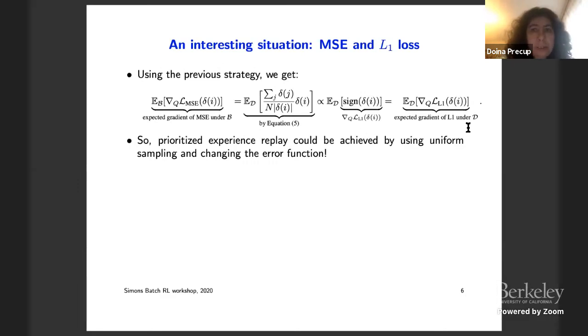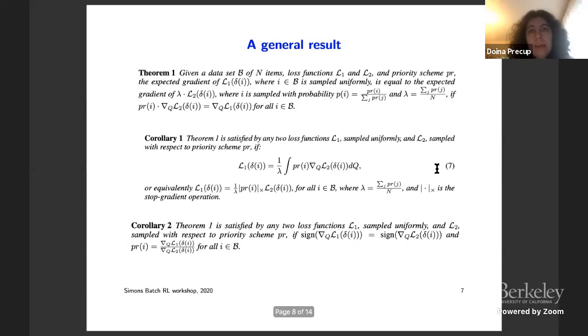And so we go from the expected gradient of a squared error to the expected gradient of an L1 error under a different distribution. And this distribution is the distribution that we would obtain by doing prioritized experience replay where the prioritization happens with the absolute magnitude of the error. And so prioritized experience replay could be achieved using uniform sampling and the change in the error function as we see here. So this is the key idea or this example.